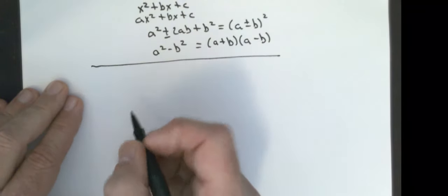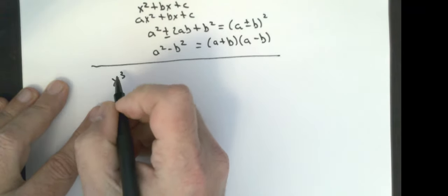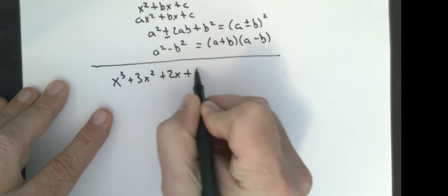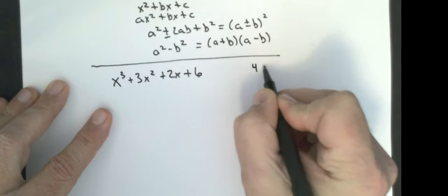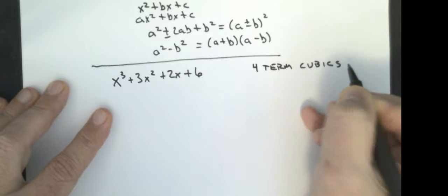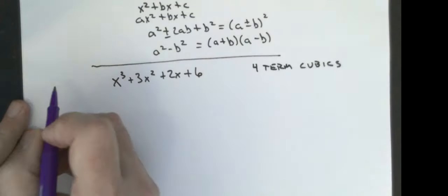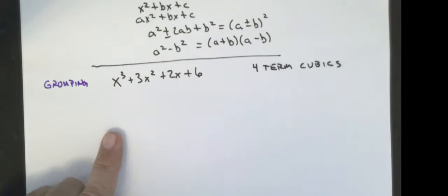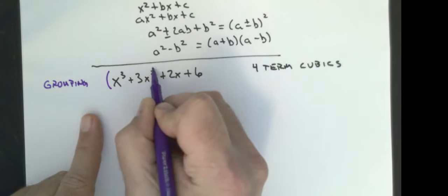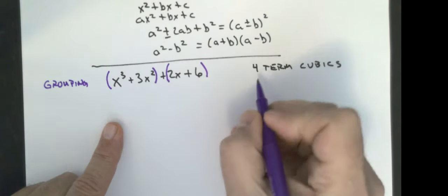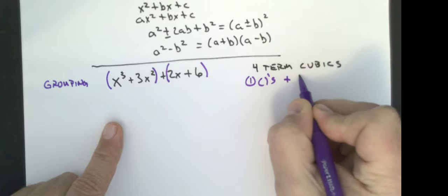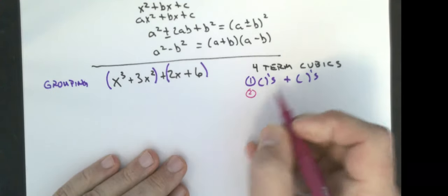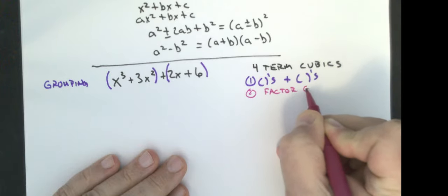We're going to start off with some special cubics that have four terms — four-term cubics. The method we are going to use is grouping. What we're going to do is put parentheses around the first two terms, parentheses around the last two terms, with a plus sign in between the two groups. Then we're going to factor the greatest common factor in each group.